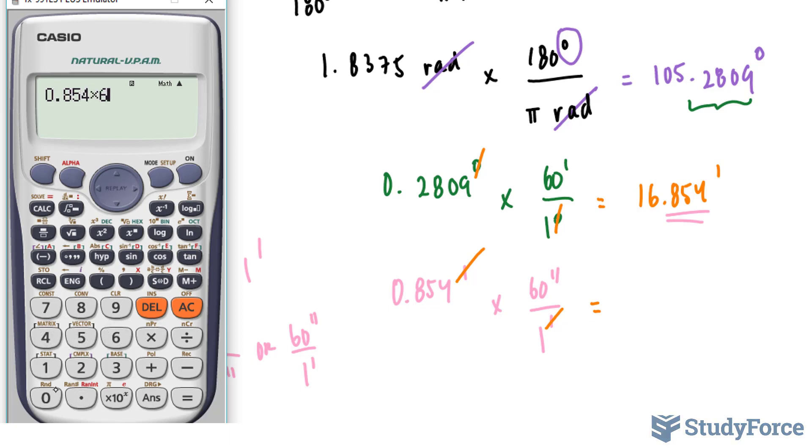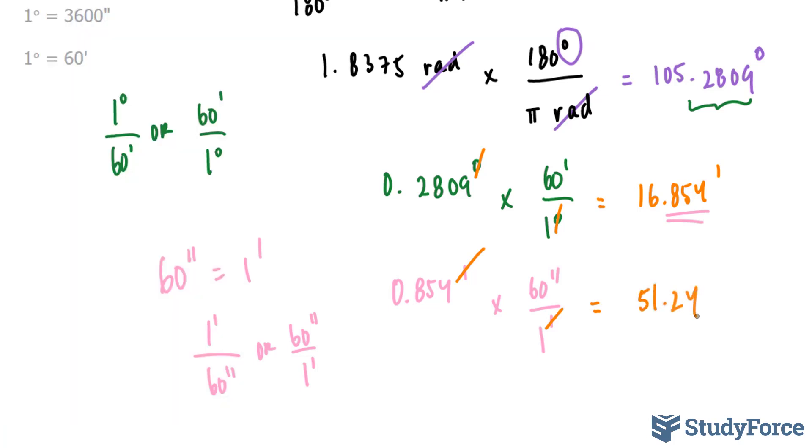0.854 times 60 gives us 51.24 seconds. So, how do we put this all together? We're going to use 105 for degrees. We're going to use 16 for minutes, and we're going to use 51 for seconds. 105 degrees, 16 minutes, and 51 seconds.